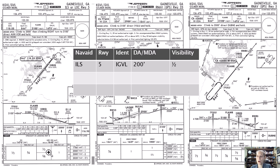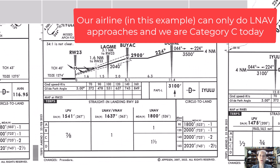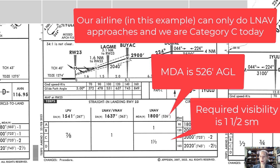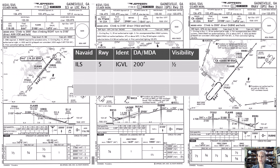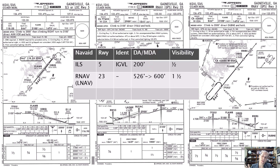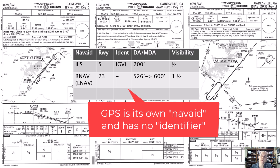Now I'm going to look at the other choices. We have an RNAV approach to runway twenty-three. I'm going to pretend that my airline does not have approval for LPV approaches — just LNAV approval in a category C aircraft. So the LNAV MDA is 526 feet and category C visibility requires one and a half statute miles. I round 526 up to 600 feet per the rounding rule. I didn't write down an identifier for the RNAV because it's GPS, so there isn't any identifier.